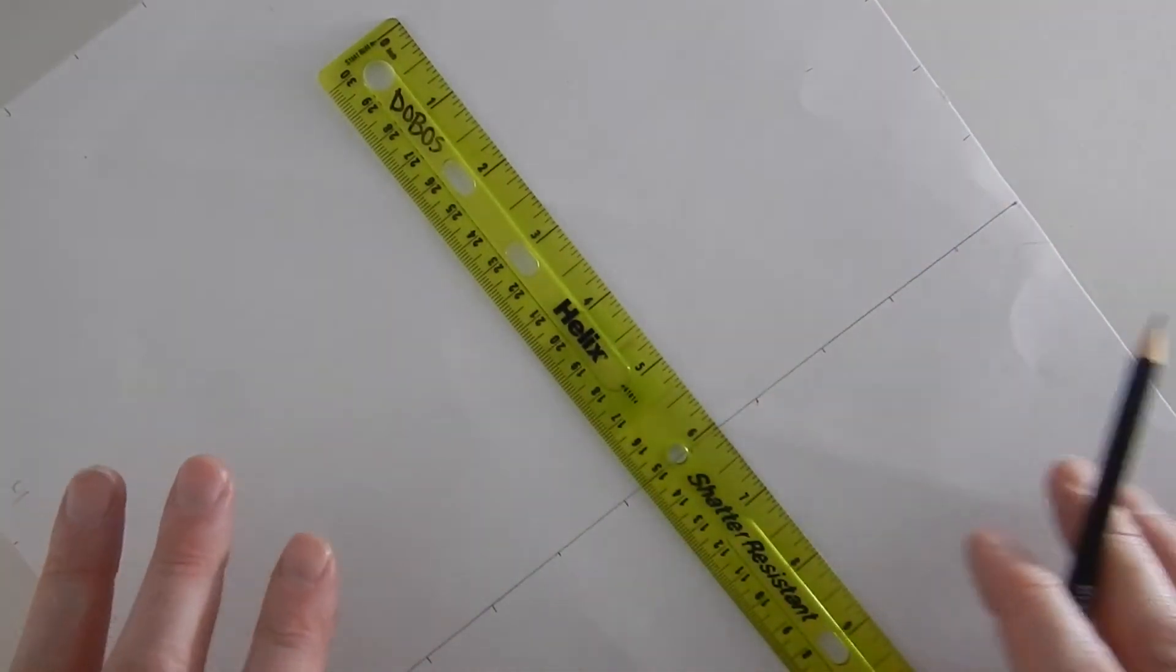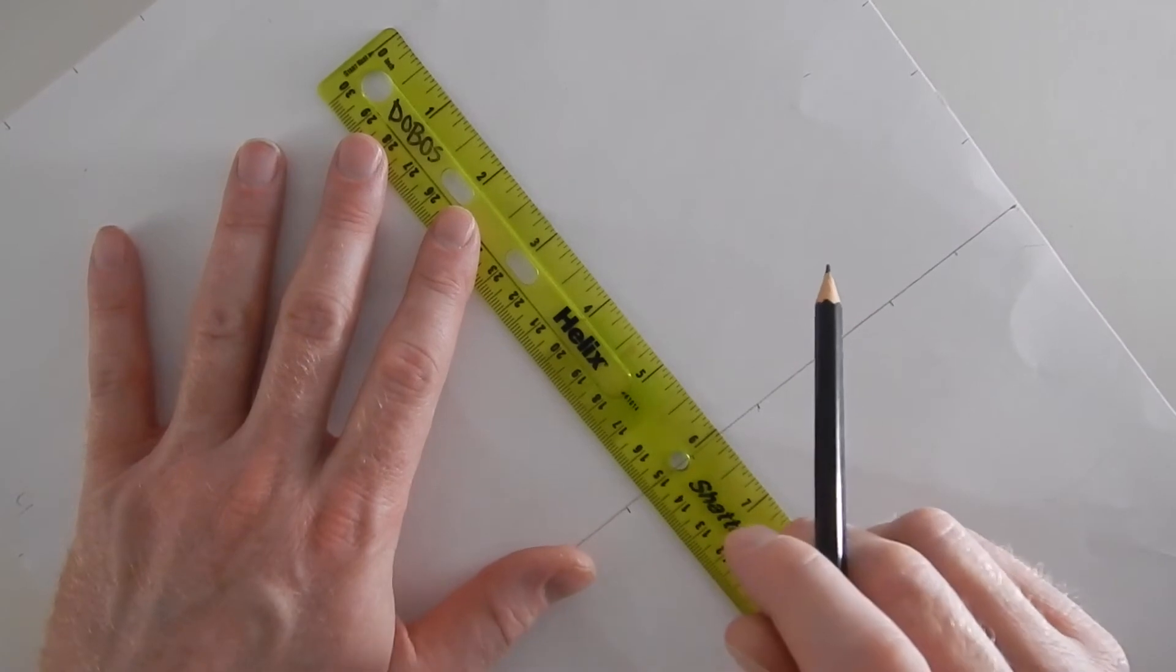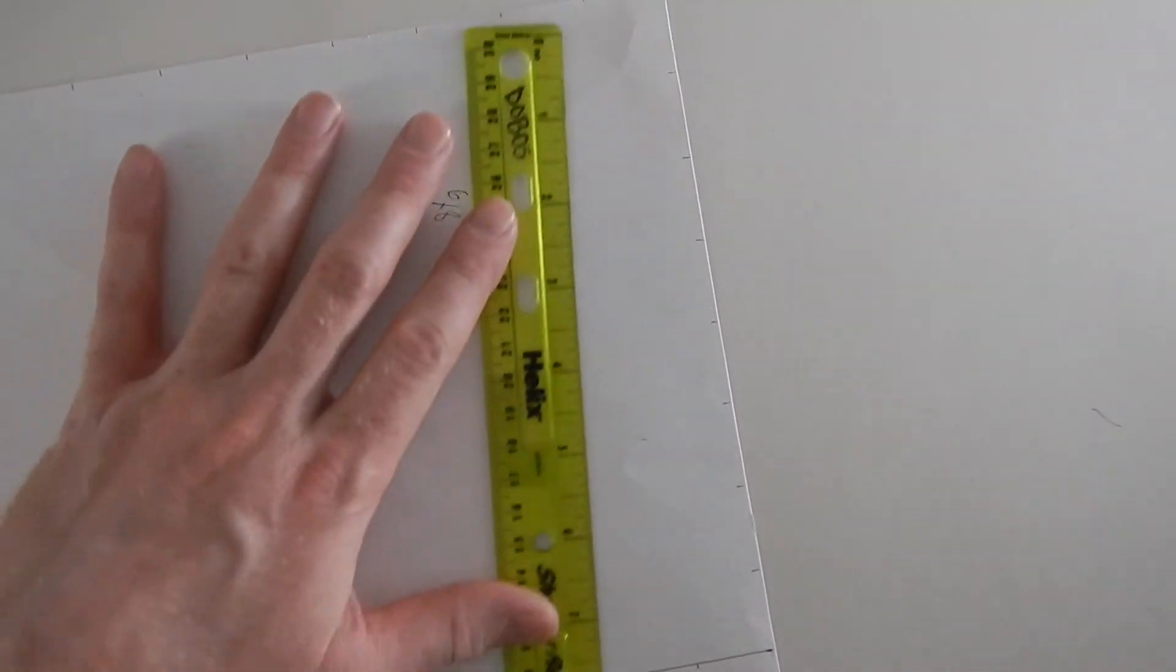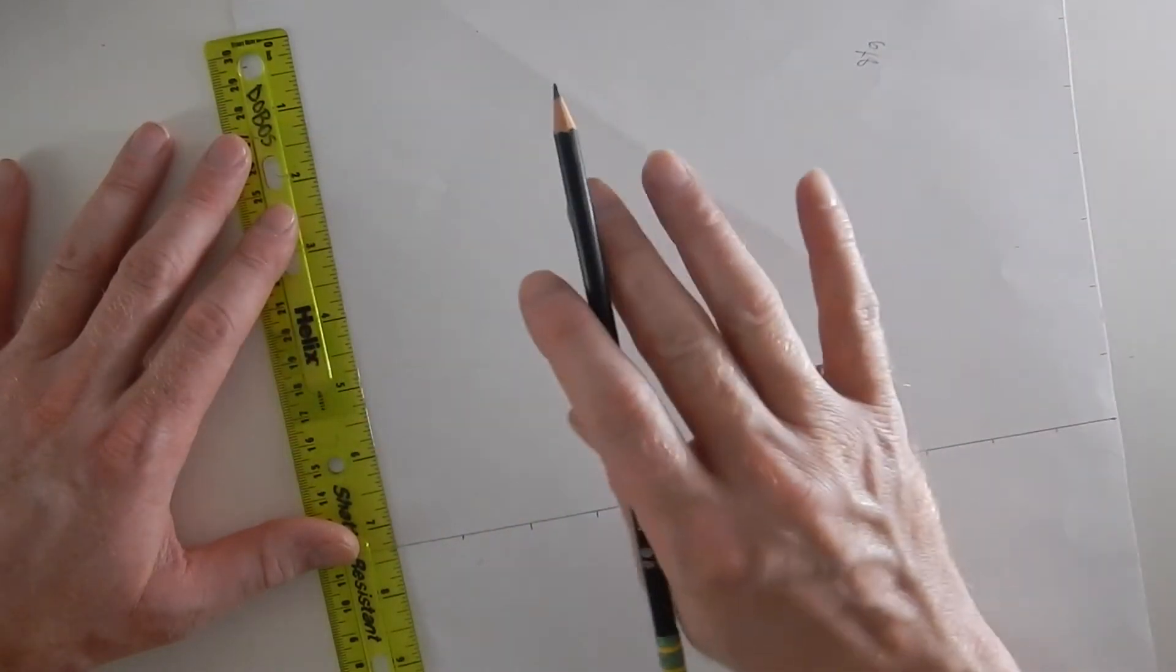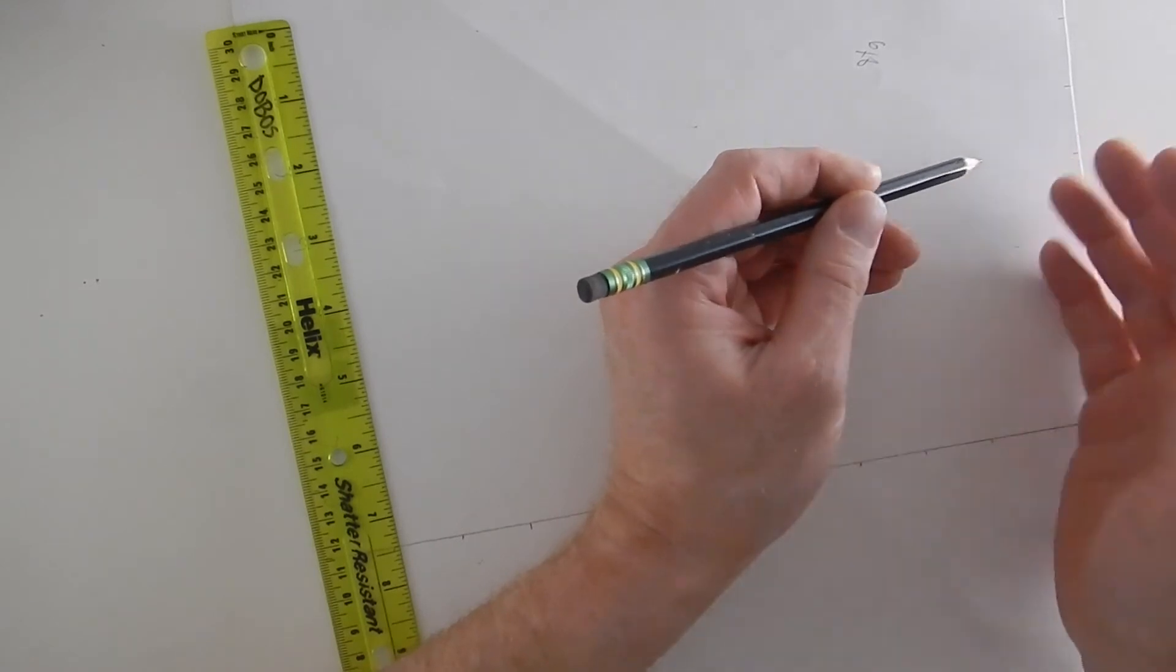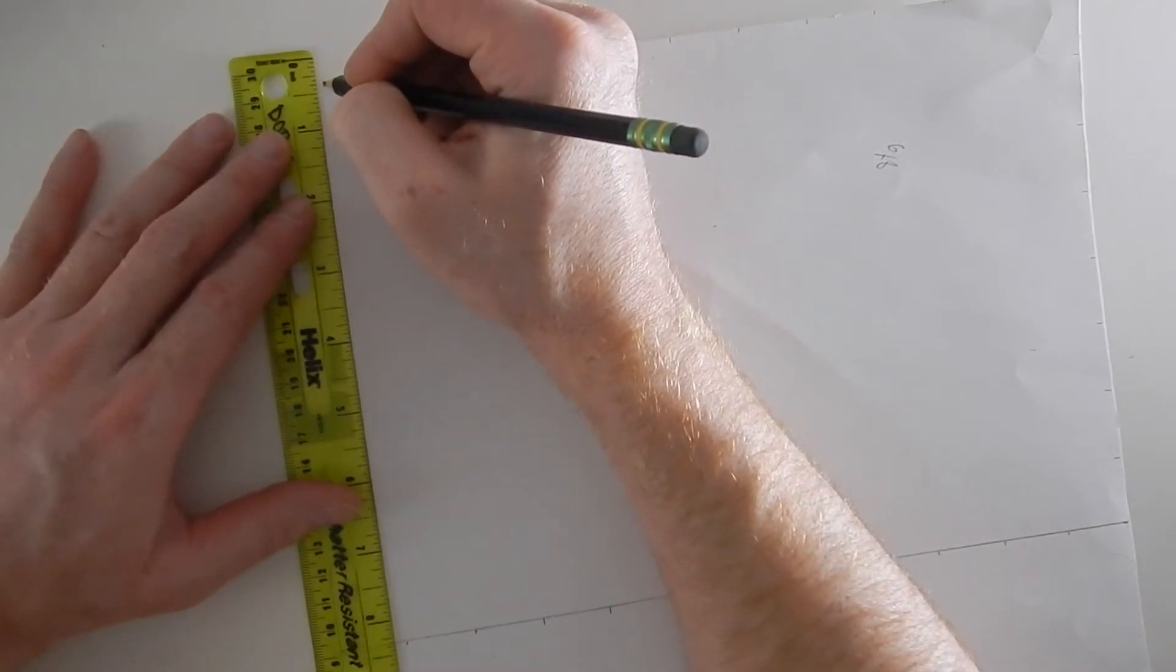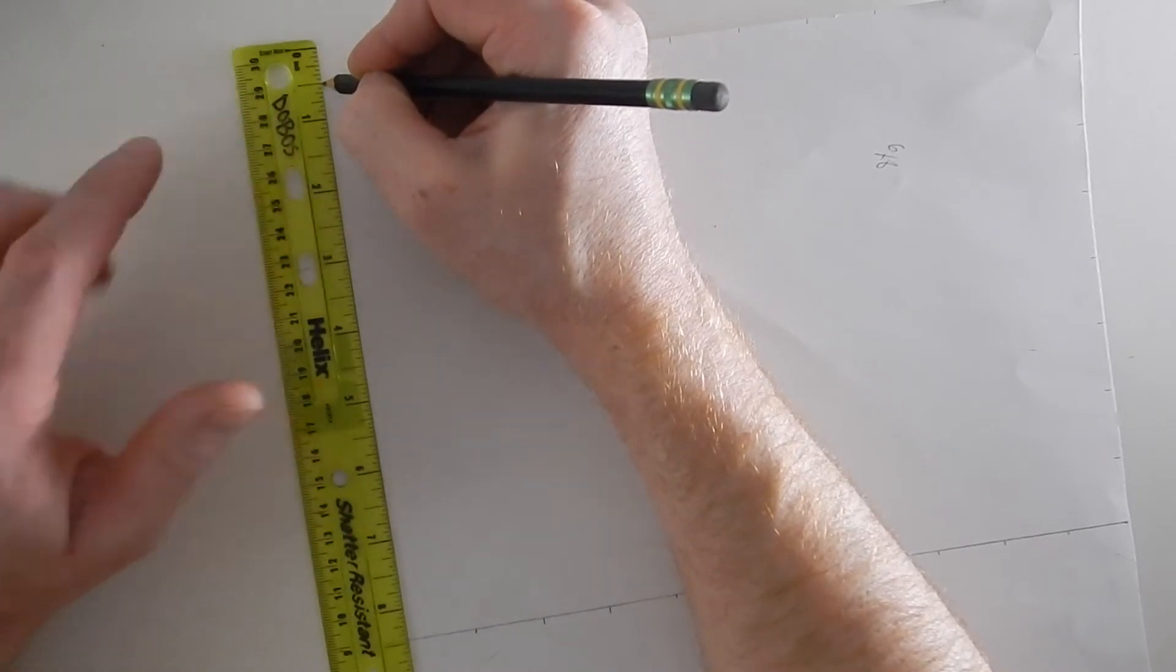Now that I have all of my marks on here, I need to start making my lines. This part can take some time, but as long as you're paying attention, this will go nice and smooth. I am right-handed. For that reason, I'm going to start from the left side. If I was left-handed, I would want to start from the right side and move over. This will make it so you don't smear any pencil lines.